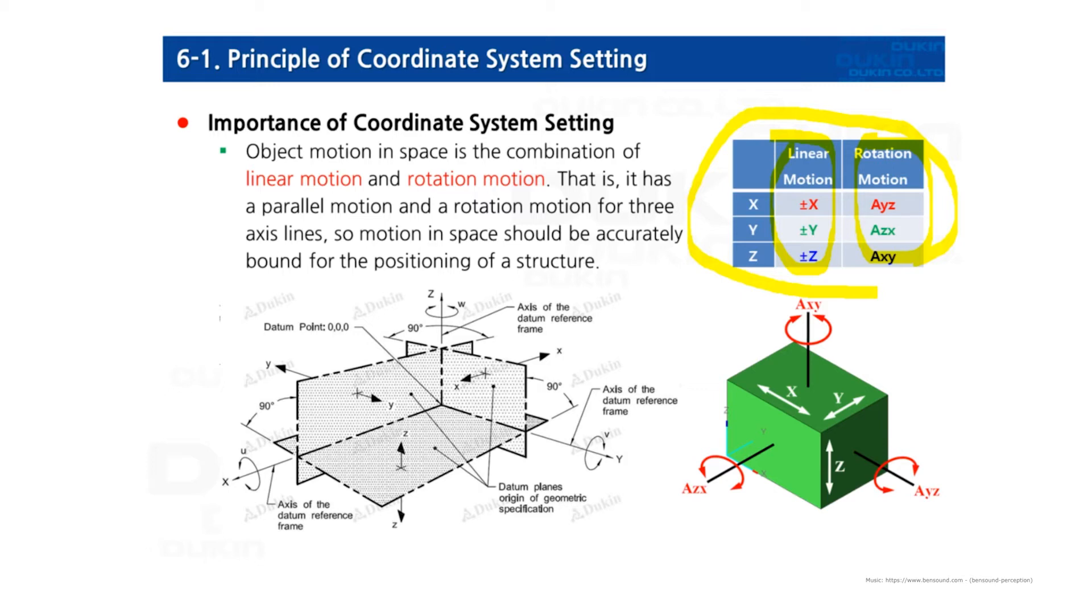Therefore, we measure basic features according to the part datum and then constrain the parts six degrees of freedom. Then the coordinate system for the parts is aligned mathematically perfect. This becomes as PCS.